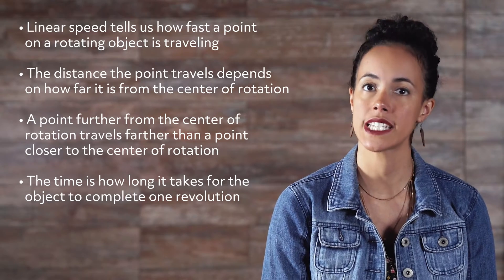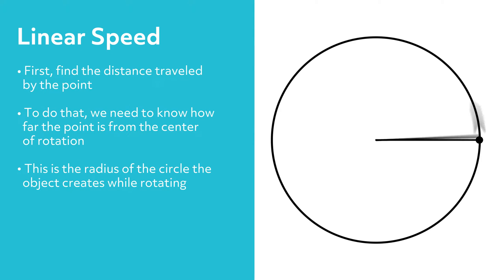The time is how long it takes for the object to complete one revolution. We calculate the linear speed of a point using a few different methods. First, we need to find the distance traveled by the point, and to do that we need to know how far the point is from the center of rotation. This is the radius of the circle the object creates while rotating. Let's call this r.